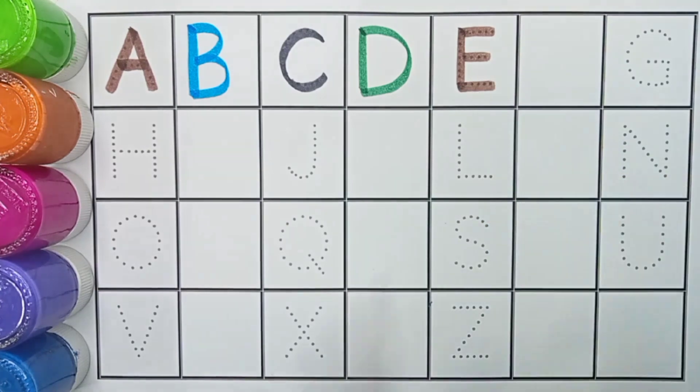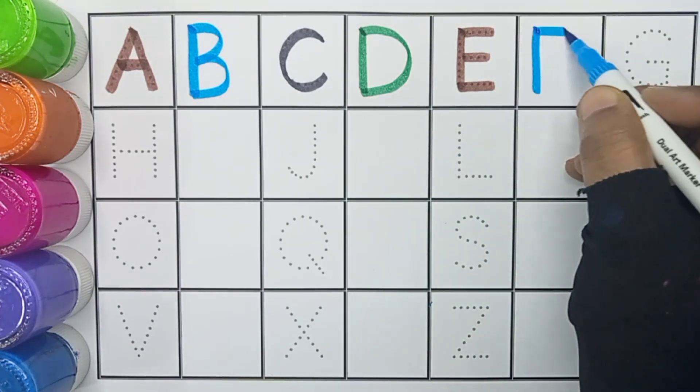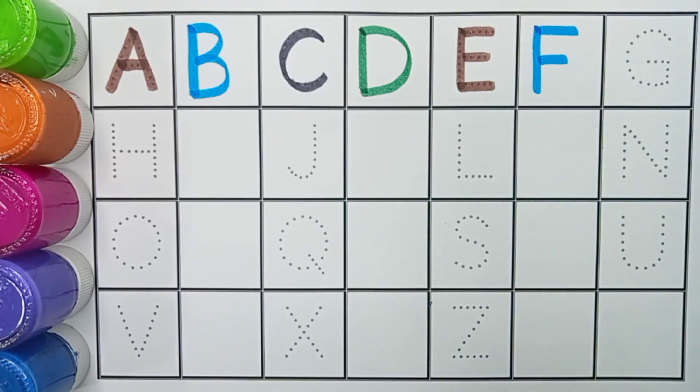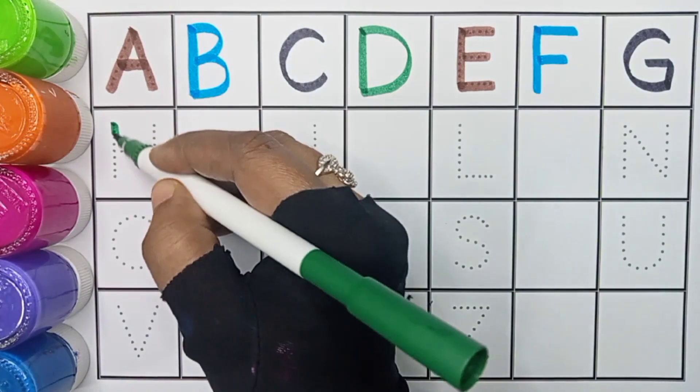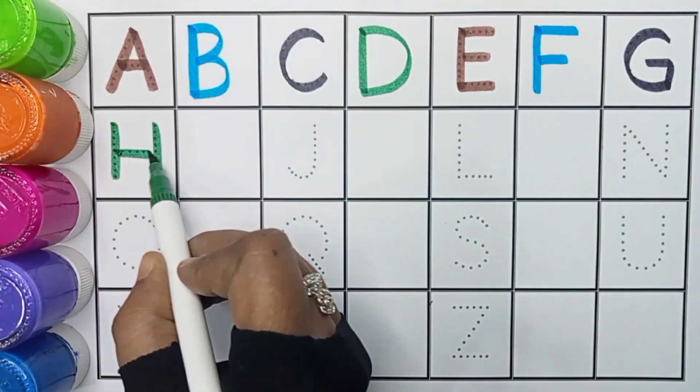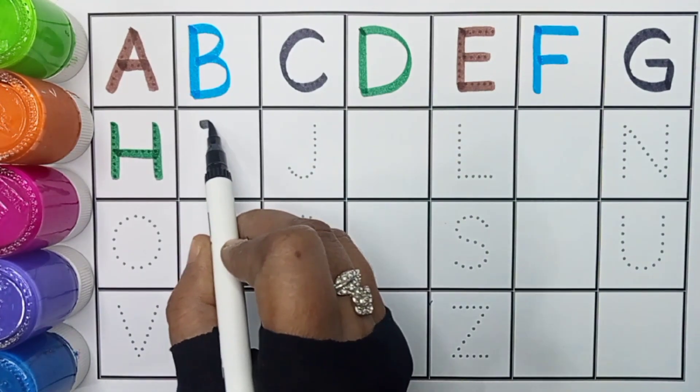Blue color. F, F for fish. Black color. G, G for grass. Green color. H, H for hen.